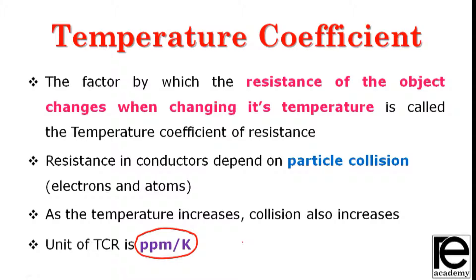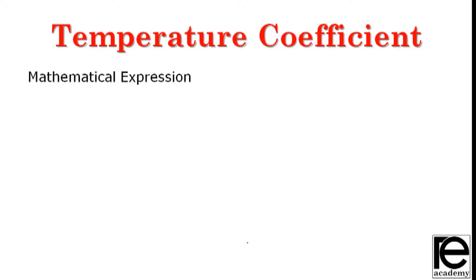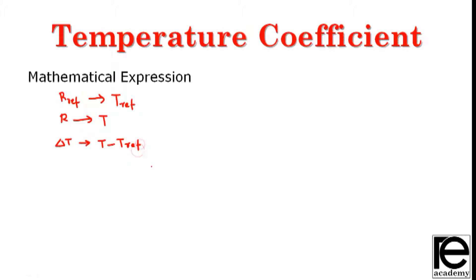For the mathematical expression of TCR: R_ref is the reference resistance, T_ref is the reference temperature, and delta T is the change in temperature, equal to T minus T_ref. Delta R represents the change in resistance.